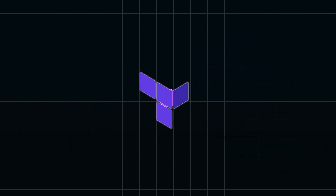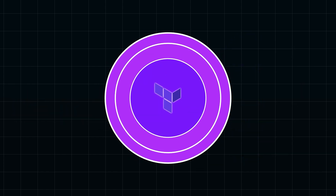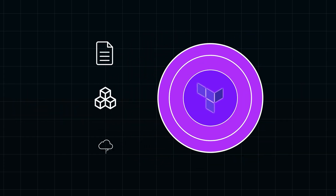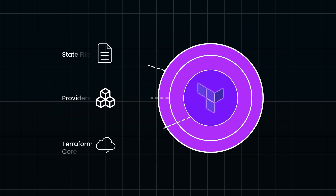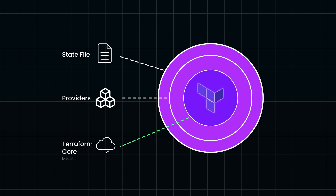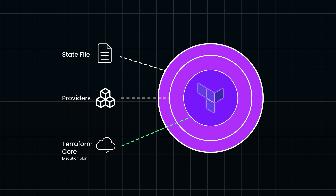To understand how Terraform works, let's break down its three core components. Terraform Core is the brain of the operation. It processes your configuration files and generates an execution plan — a blueprint of the infrastructure changes you want to make. Once ready, you can run commands like Terraform apply to create or modify resources.